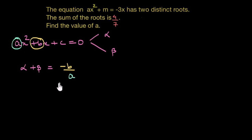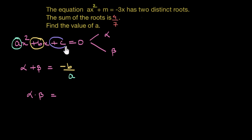Similarly, the product of roots, alpha times beta, would be given as constant value c divided by coefficient of x squared, that is a.